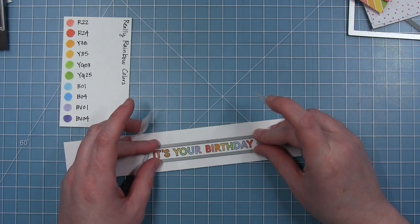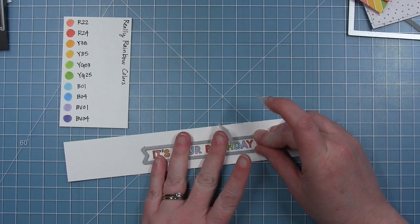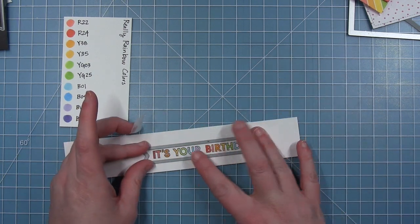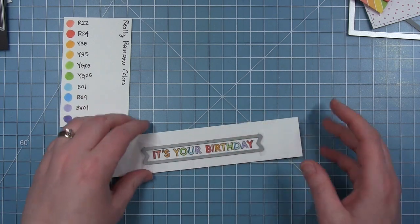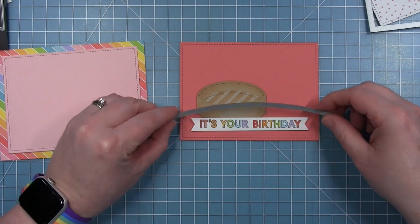Once I get it all colored in, I'm going to use one of the sentiment banner dies. I like that you can see that sentiment through there, and then I'll just die cut this. And there is my sentiment that's going to go along the bottom.